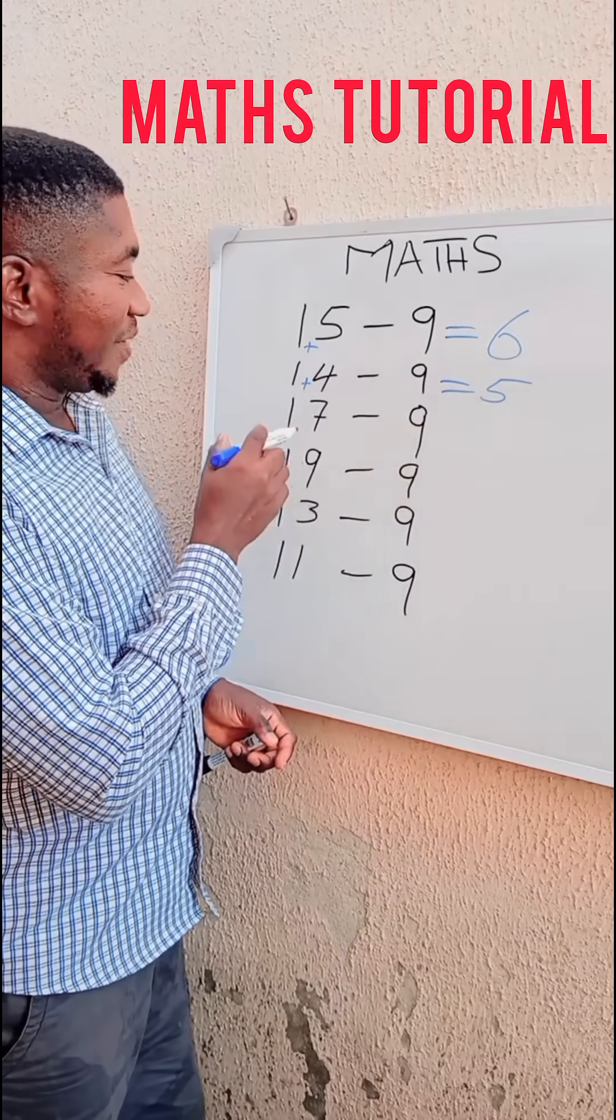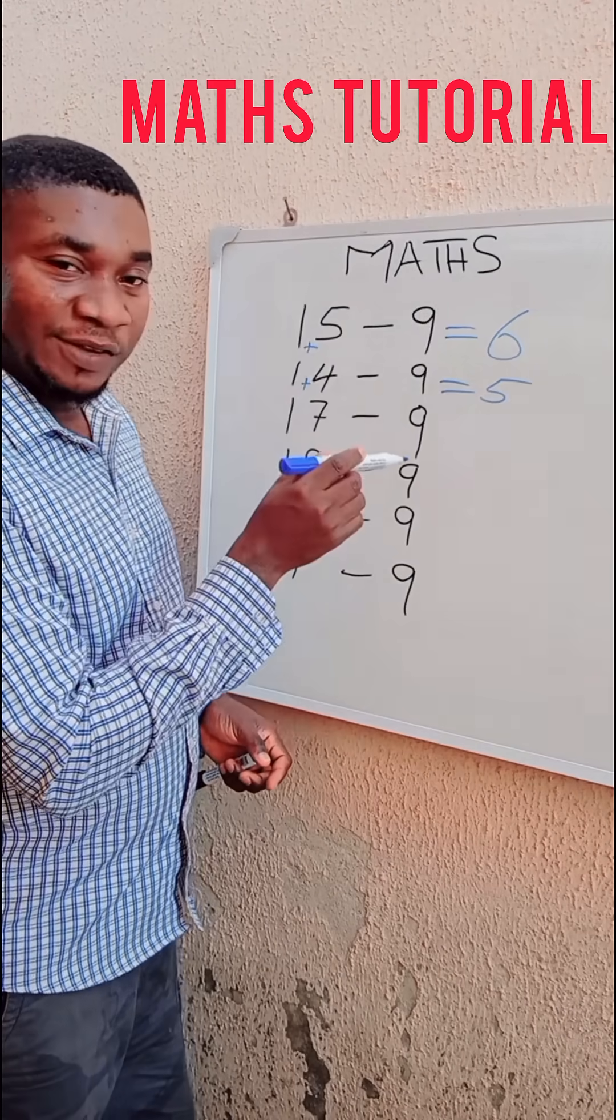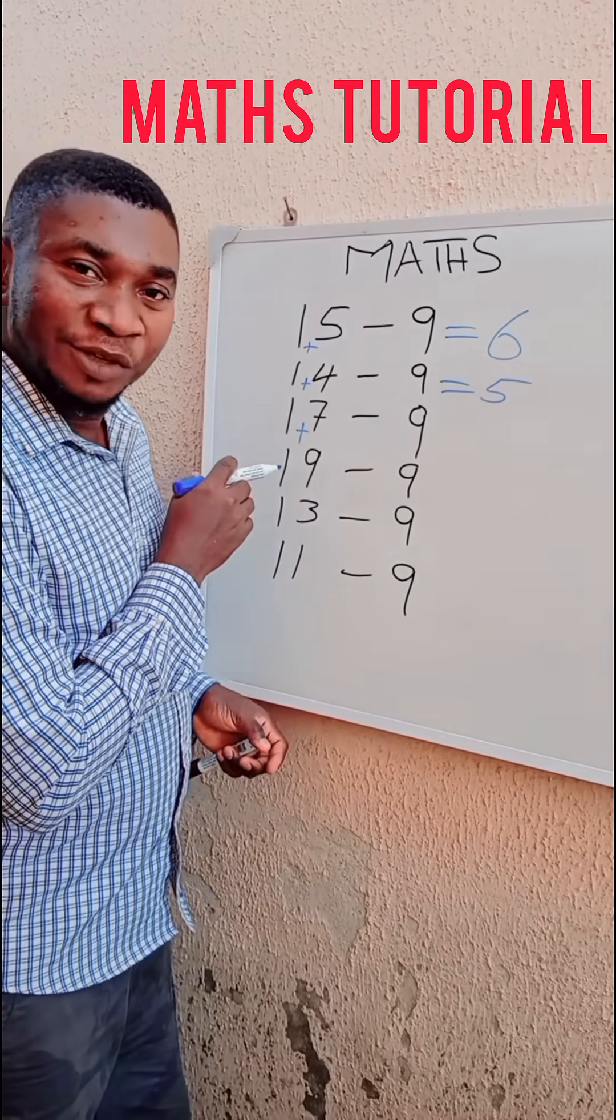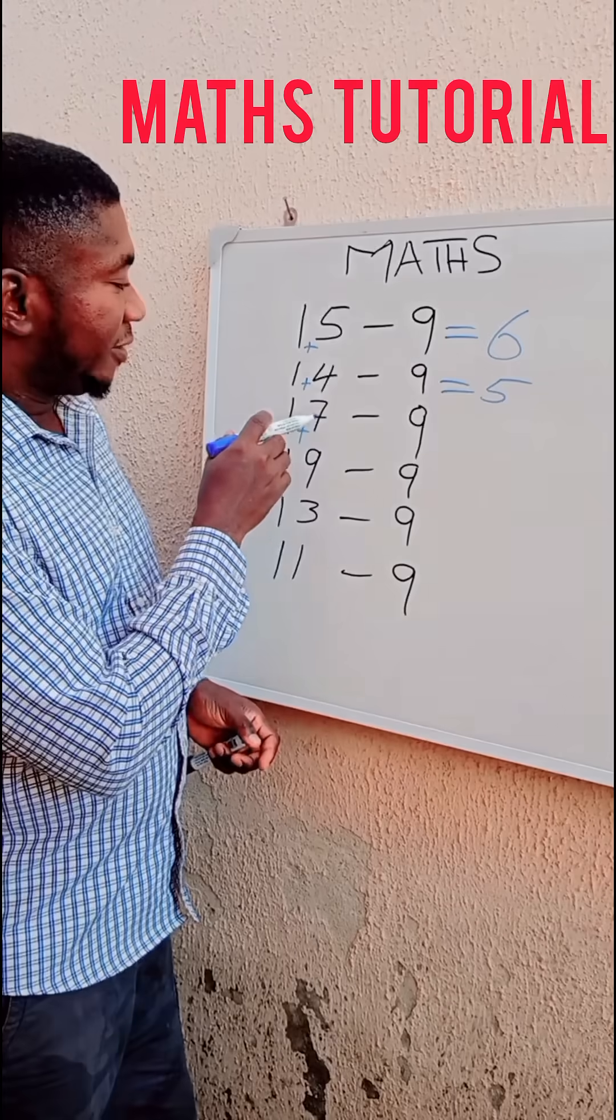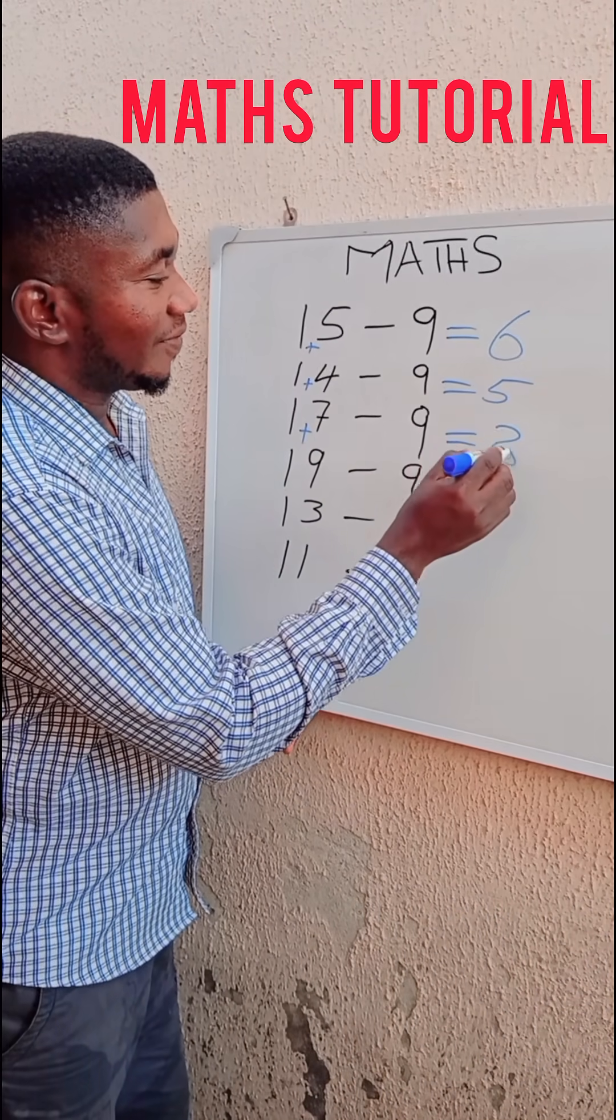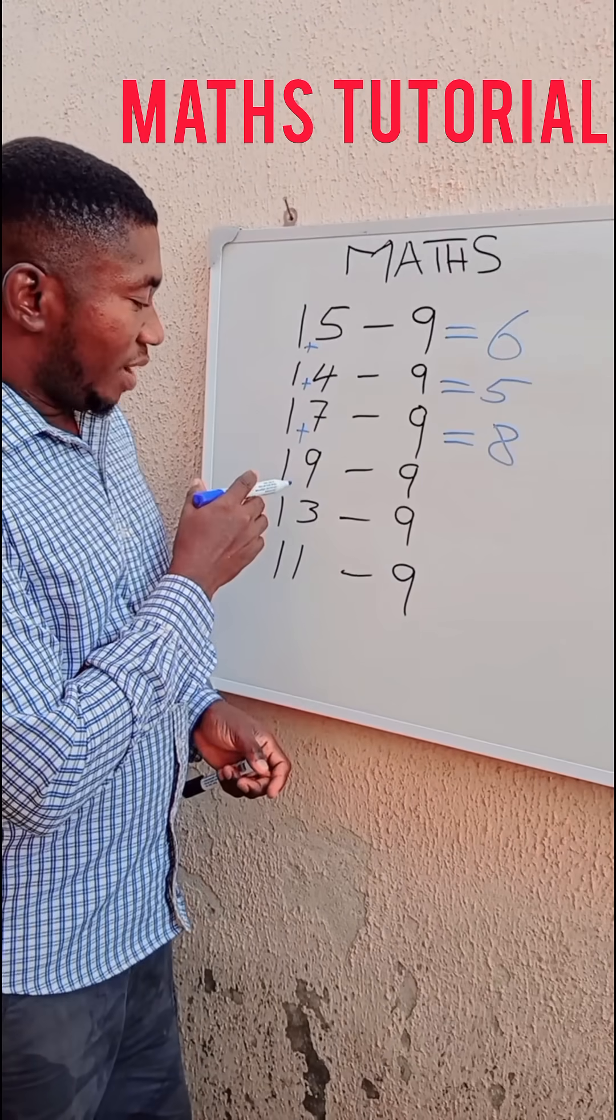Now here we have 17 minus 9. Instead of you to crack your brain, just put the plus sign there. 1 plus 7 is equal to 8.